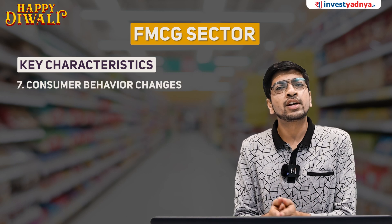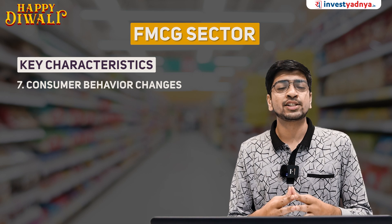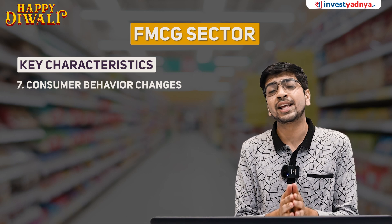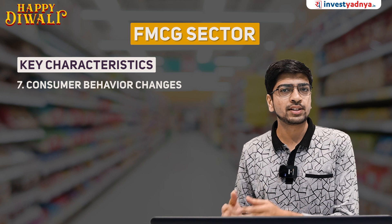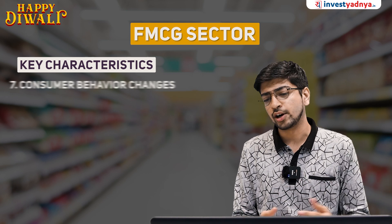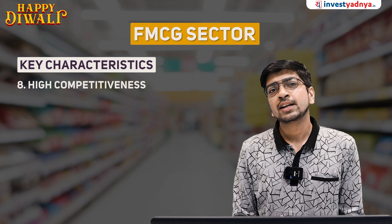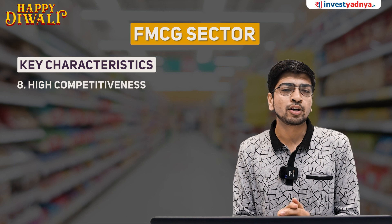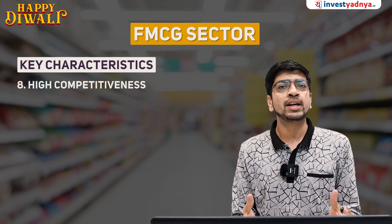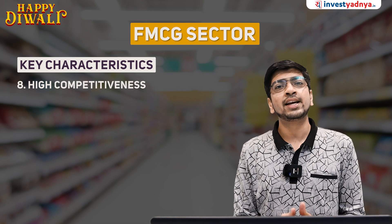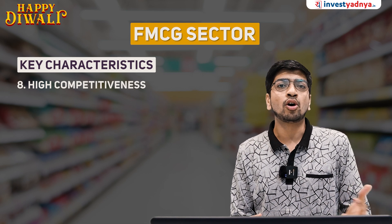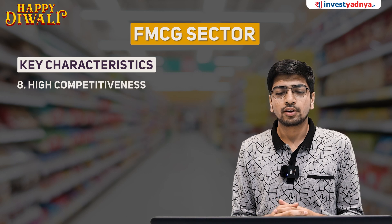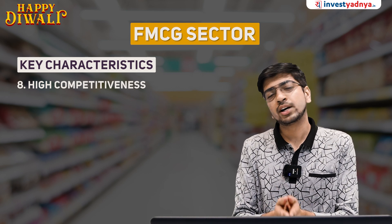Consumer behavior is also rapidly changing. There are many products which will not sustain after one time. So FMCG companies have to be very nimble and proactive — they need to see how customers' behavior is changing and make their strategy accordingly. Competitiveness is high in this industry. There are a lot of companies who battle for the same type of product. If you look at any brand of soap, there are many similar brands. Every company tries to create some differentiation, either through ingredients or through advertising.